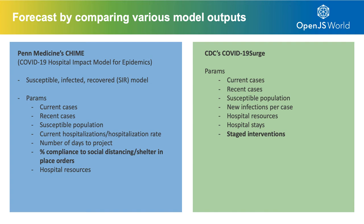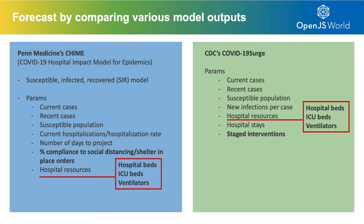When we talk about forecasting using models, there are two authoritative models we at Esri have looked at: the CHI model, developed by Penn Medicine, and the CDC's COVID-19 Surge model. They both look at similar parameters — number of cases in an area, number of hospitalizations, total hospital resources, and susceptible populations. The CHI model looks at social distancing as a parameter, letting you indicate the percentage of the population that complies. The COVID-19 Surge model looks at a staged intervention approach. In our application, we want to look at three variables: how variations in parameters affect required hospital beds, ICU beds, and ventilators needed.